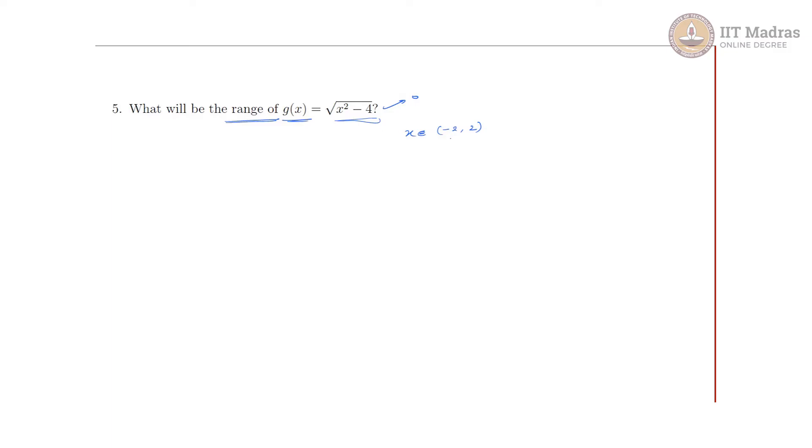So we do not need to see in this region, the value of function in this region we do not need to see. We will look only where x is this side or x is this side. So we will see in (-∞, -2] ∪ [2, ∞) because here it is open, so this will be close.